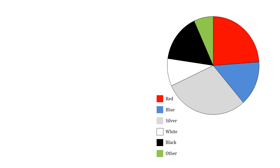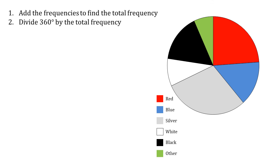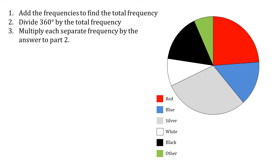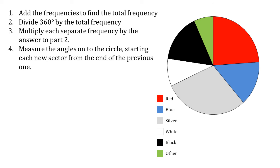So there we have it. To convert data into a pie chart: add the separate frequencies together to find the total frequency; divide 360 degrees by the total frequency to find how many degrees per item; multiply that answer by each separate frequency to find the size of each sector; then measure the angles onto the circle, starting each new sector from the end of the previous one; and finally, colour in the pie chart and add a key so people know which sector represents which category.